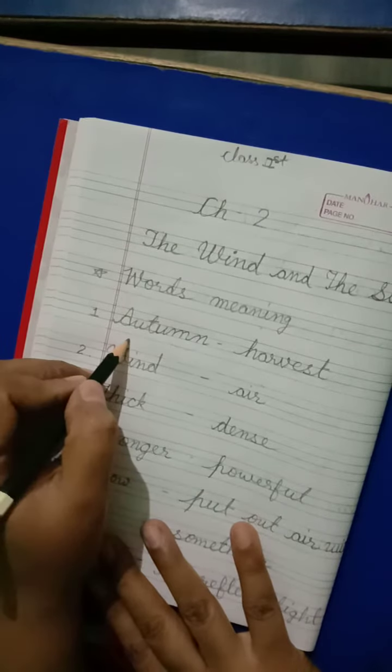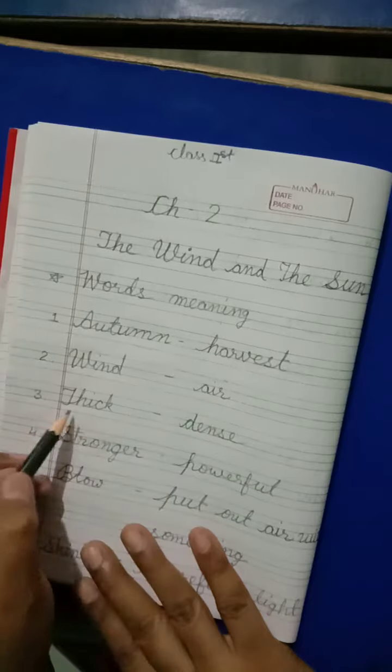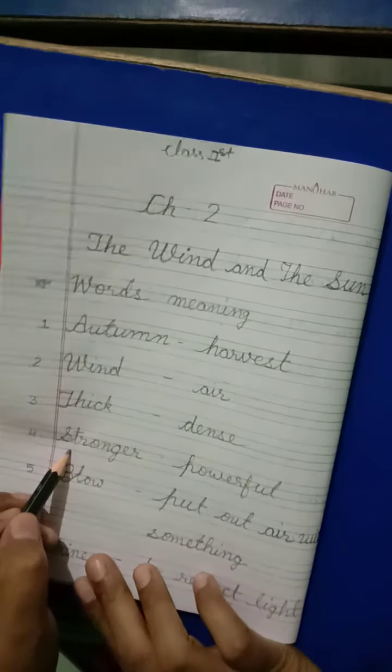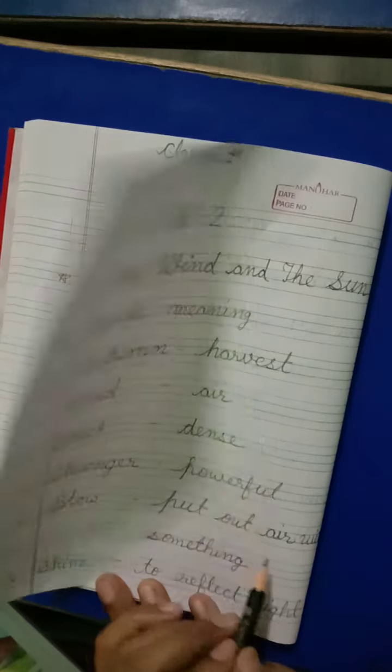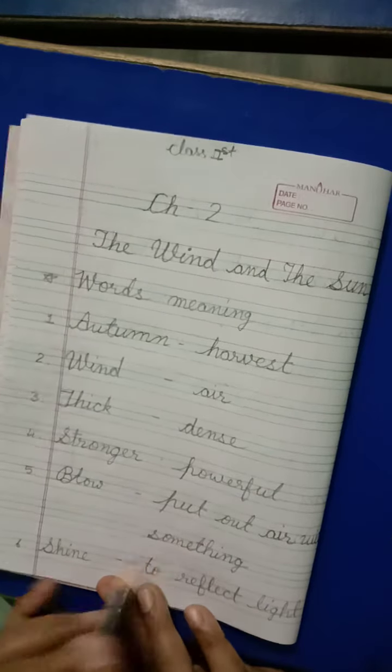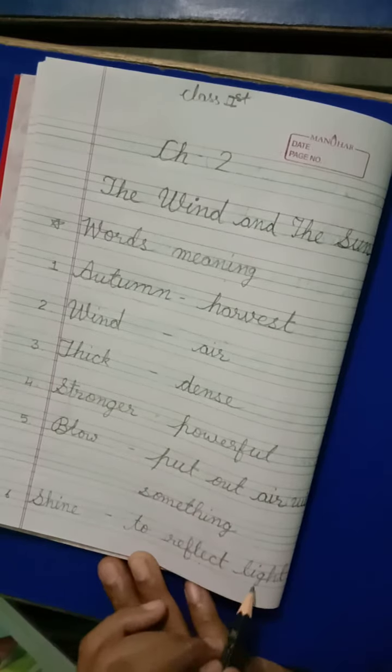First is autumn, it means harvest. Wind means air. Thick means dense. Stronger means powerful. Blow means put out air with something. Shine means to reflect light.